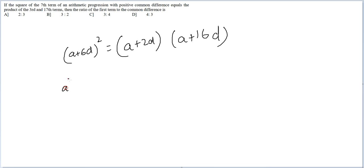Let's write A square plus 36D square plus 12AD is equal to A square plus 2AD plus 16AD plus 18AD plus 32D square. This is what we are getting.